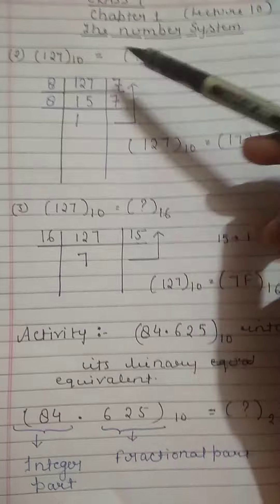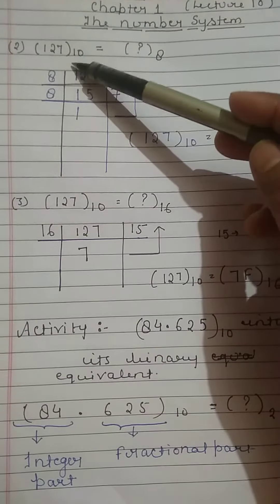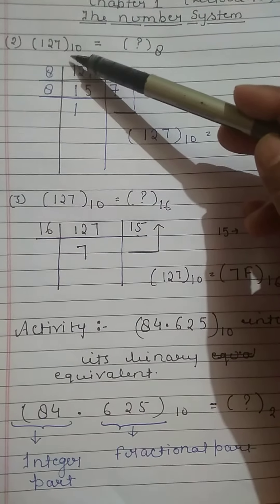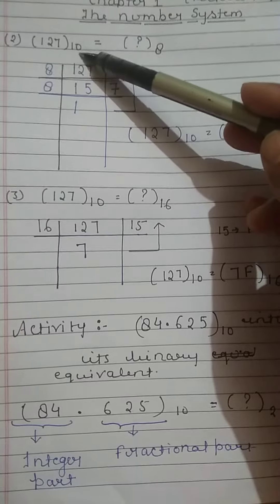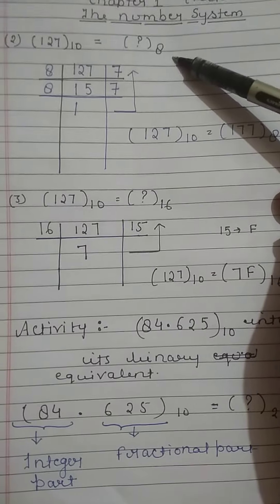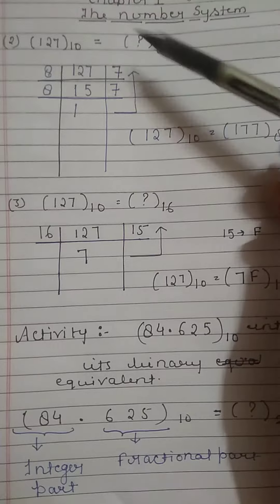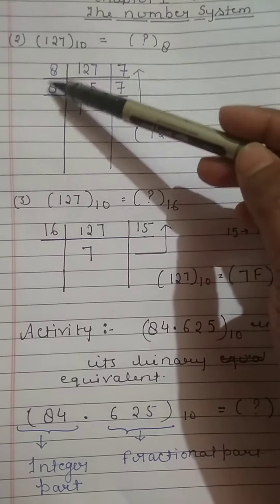Now I have taken the same number 127. This is a decimal number and we have to convert it to octal. So we will apply the same process. We will divide 127 by 8.